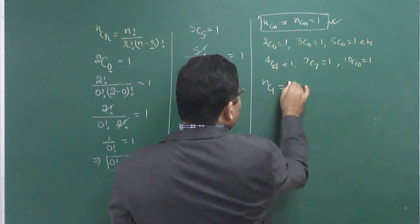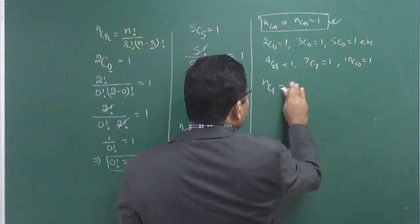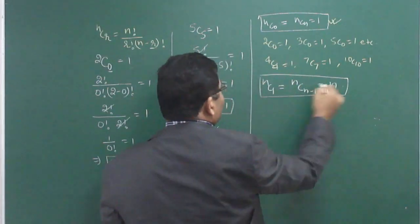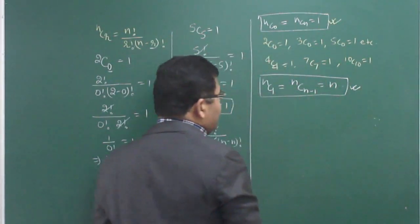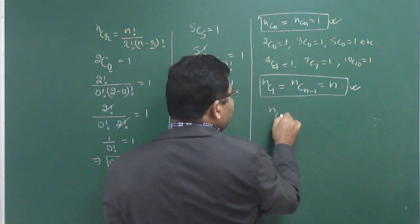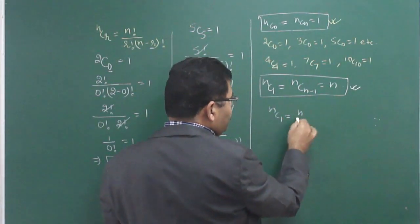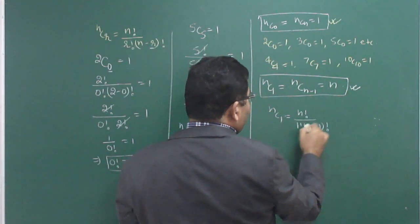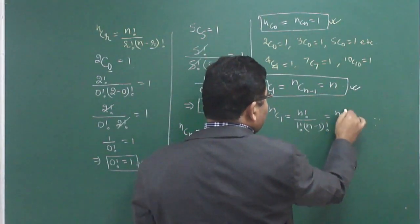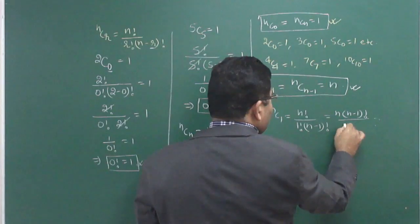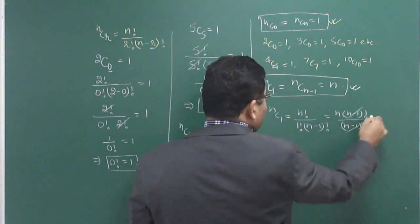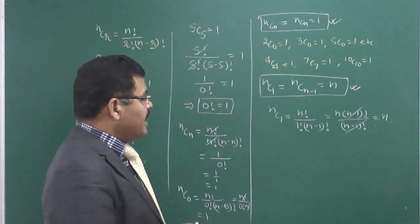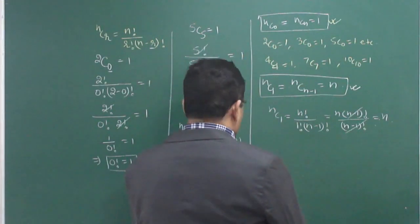Moreover, NC1 = N, and NCN−1 = N as well. To prove NC1 = N: N! / (1! × (N−1)!) = N × (N−1)! / (N−1)! = N. So NC1 = N. Similarly NCN−1 = N can be proved.